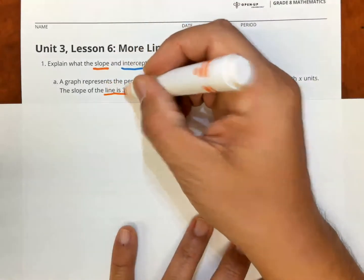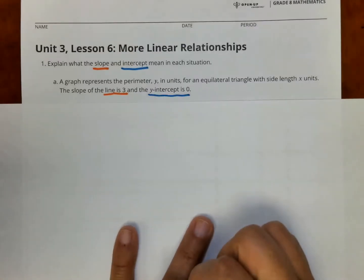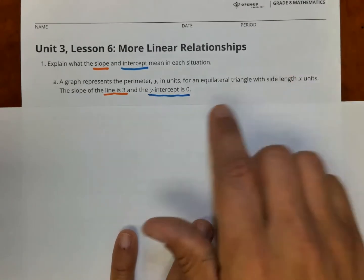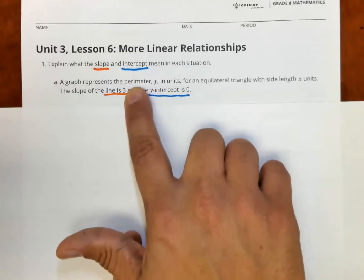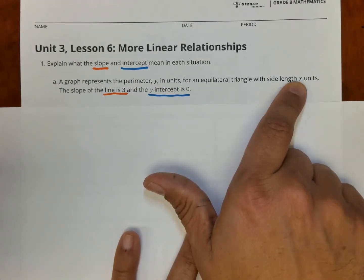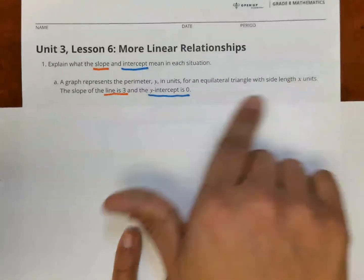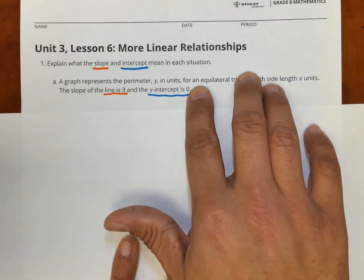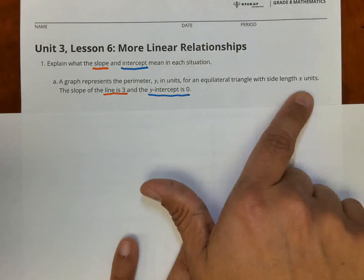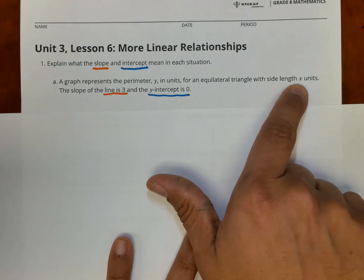So here we have the slope of the line is 3. The y-intercept is 0. In this problem, you are comparing the perimeter of the shape in y with side lengths x units. So what this means when the slope is 3, remember the slope is related to the x term right here. What's happening here when the slope is 3 means that when the side length of the triangle is 1 unit, to find the perimeter, you do 3 times 1.